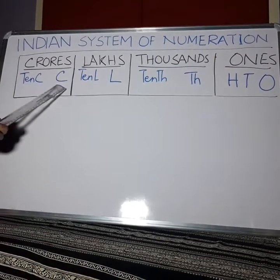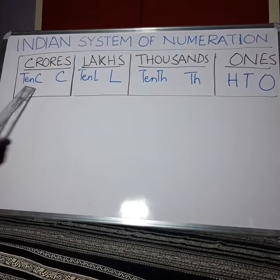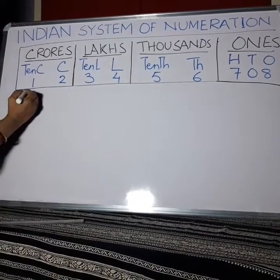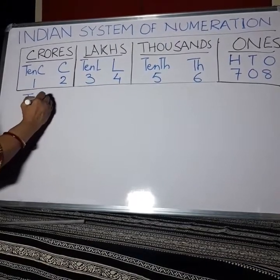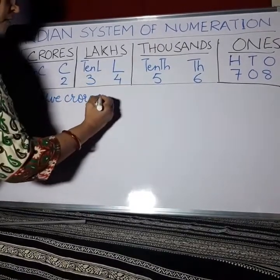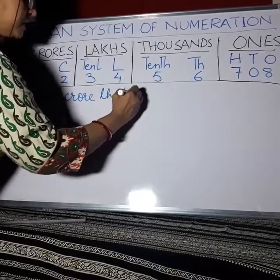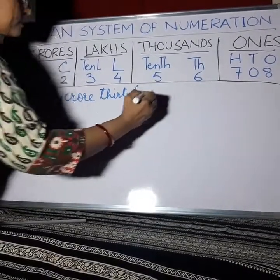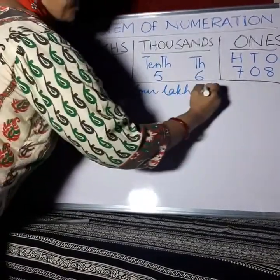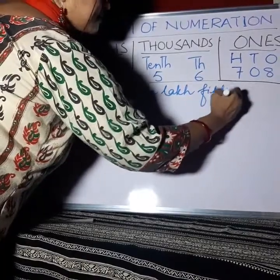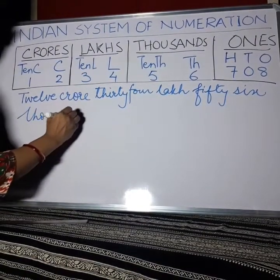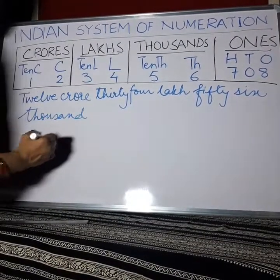In the Crores period, we have two places: Crores and Ten-Crores. When we write the number name for these numbers, we read the two crores digits together and write 12 crore, then 34 lakhs, 56,000, 708.